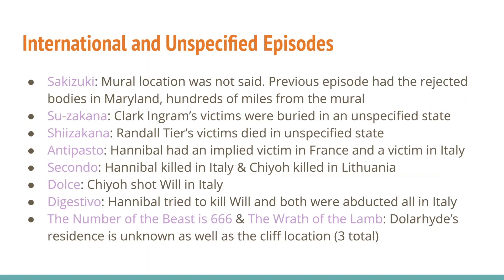The other confirmed locations are four in Italy, one in Lithuania, and six unspecified. In Sakizuki, the mural location was not said — this episode had rejected bodies in Maryland, which they said was hundreds of miles from the mural. In Suki-Yaki, Clark Ingram's victims were buried in an unspecified state. In Shiizakana, Randall Tier's victims died in an unspecified state. In Antipasto, Hannibal had an implied victim in France. In Secondo, Hannibal killed in Italy and Chio killed in Lithuania. In Dolce, Chio shot Will in Italy. In Digestivo, Hannibal tried to kill Will and they were both abducted in Italy. In The Number of the Beast is 666 and The Wrath of the Lamb, Dollarhyde's residence is unknown, as well as the cliff location where the show ends.